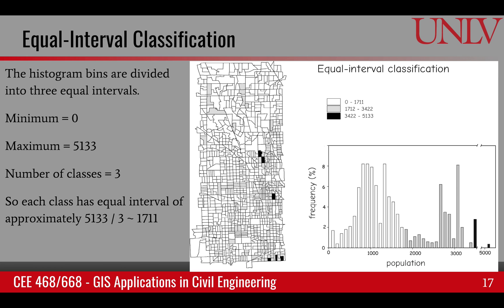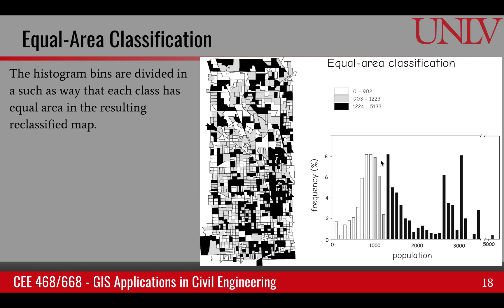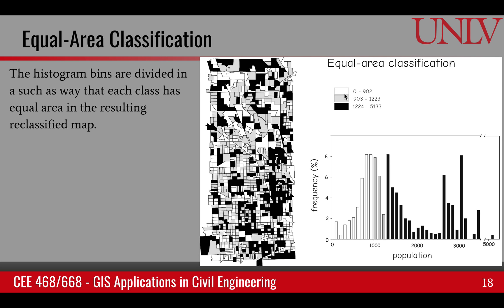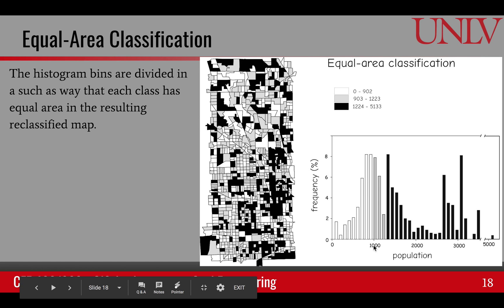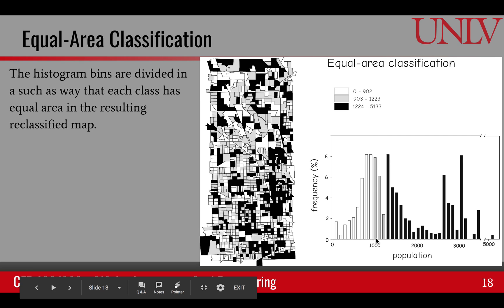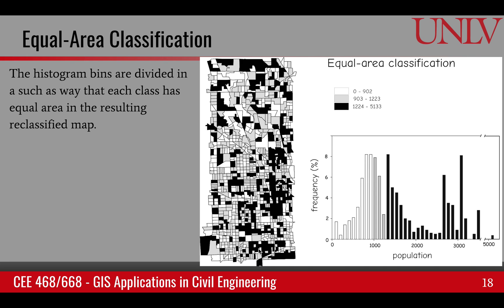This can be addressed by equal area classification. Instead of being based upon x-axis values, it's based upon area, so each class should get equal area. If the total area is 100%, the first class gets 33.33% of the area, the second class also gets one-third, and the third class also gets one-third. So the medium class may have very few values in the histogram, but area-wise they cover a large section of the overall feature area.